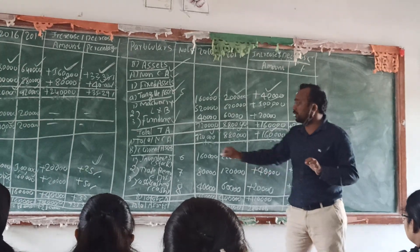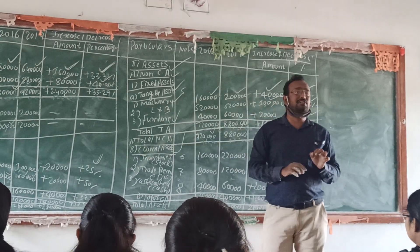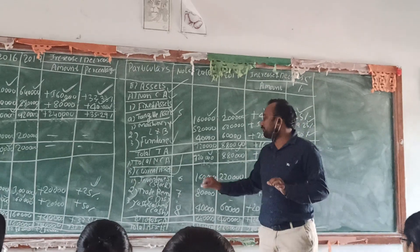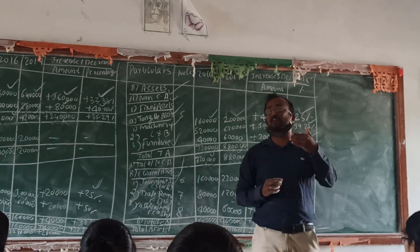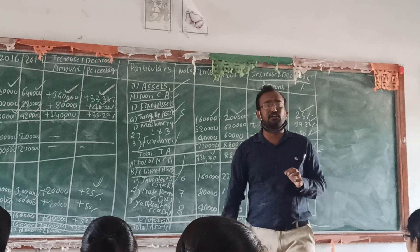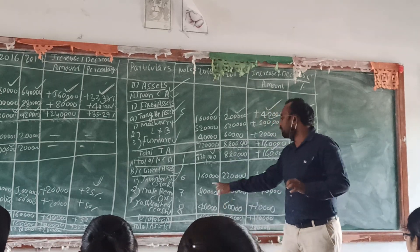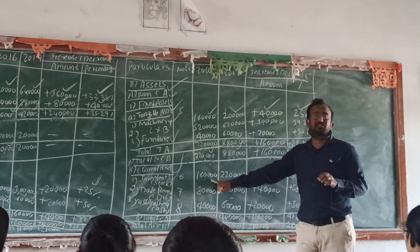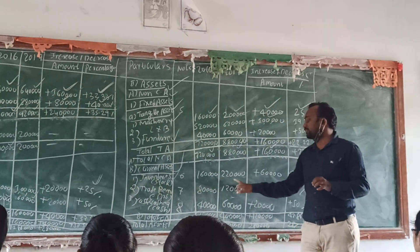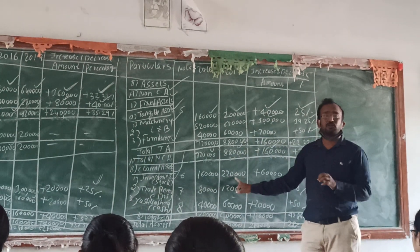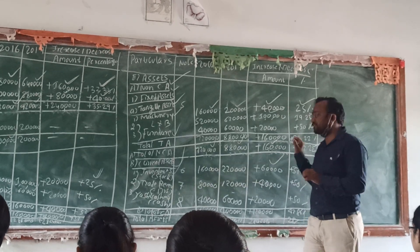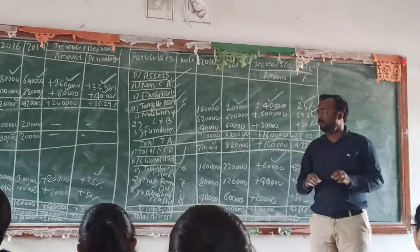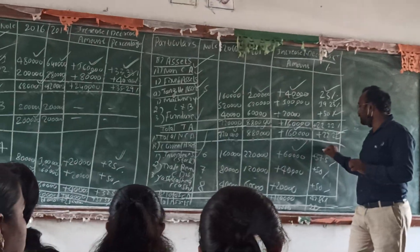Moving on to current assets. The first current asset is inventory, which is equal to cost — inventory is also called stock. First year inventory is 1,60,000 and second year is 2,20,000. The difference amount is 60,000 and the percentage is 37.5.